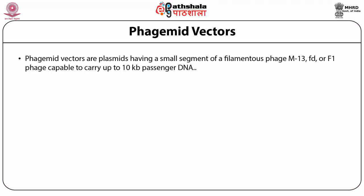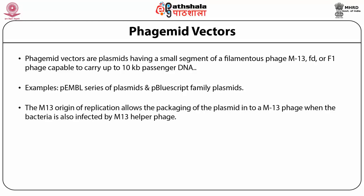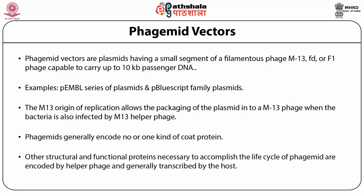Phasmid vectors are plasmids having a small segment of filamentous phage M13 or FD or F1 phage, capable of carrying 10 kb passenger DNA. Examples are EMBL series plasmids and pBluescript family plasmids. The M13 origin of replication allows packing of the plasmid into an M13 phage when the bacteria is also infected with an M13 helper phage. Plasmids generally encode no or one kind of coat protein; other structural and functional proteins necessary for the life cycle of phasmids are encoded by the helper phage and transcribed by the host.